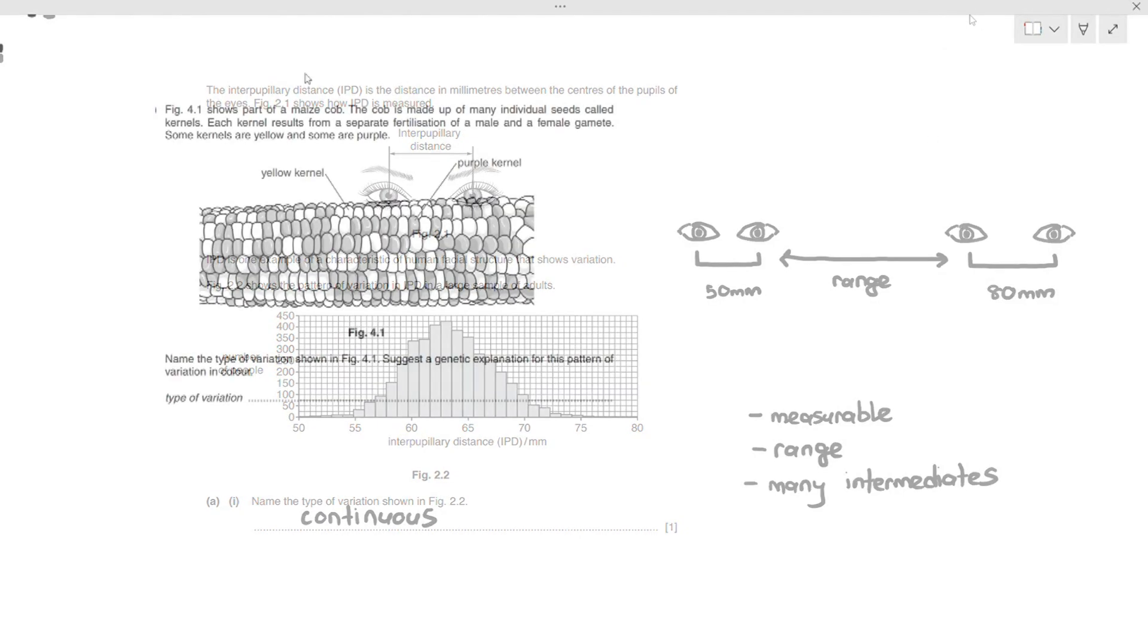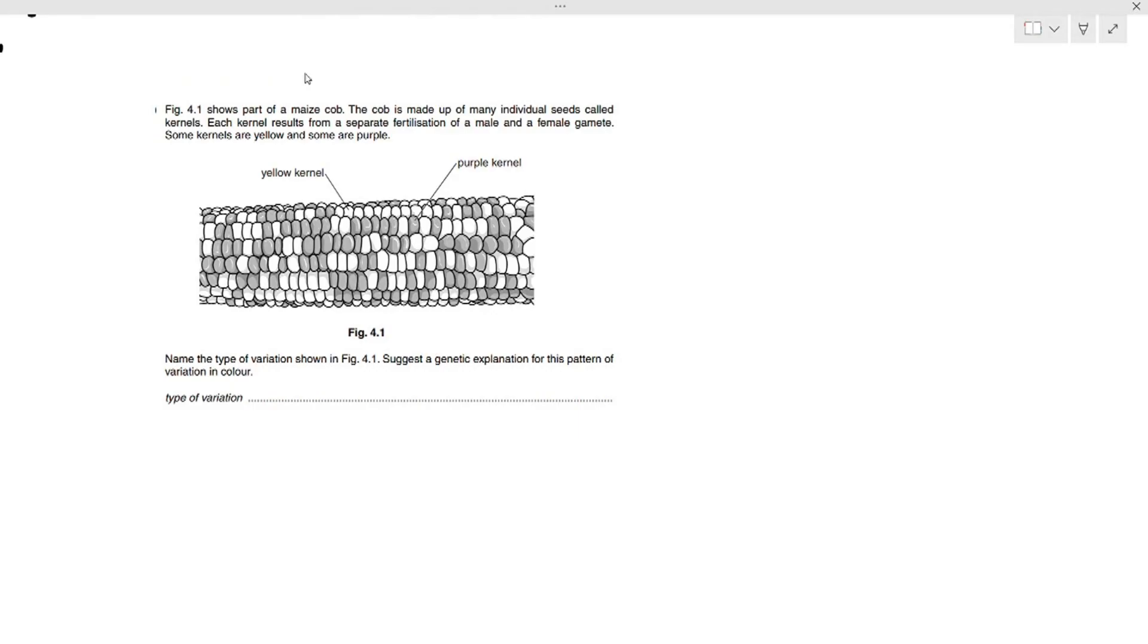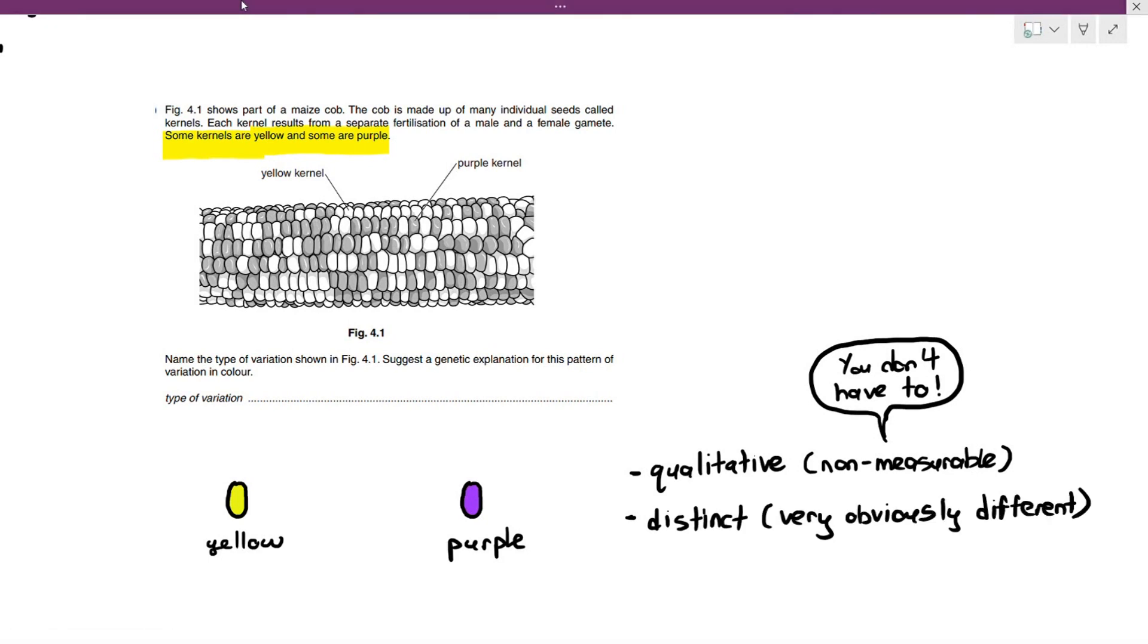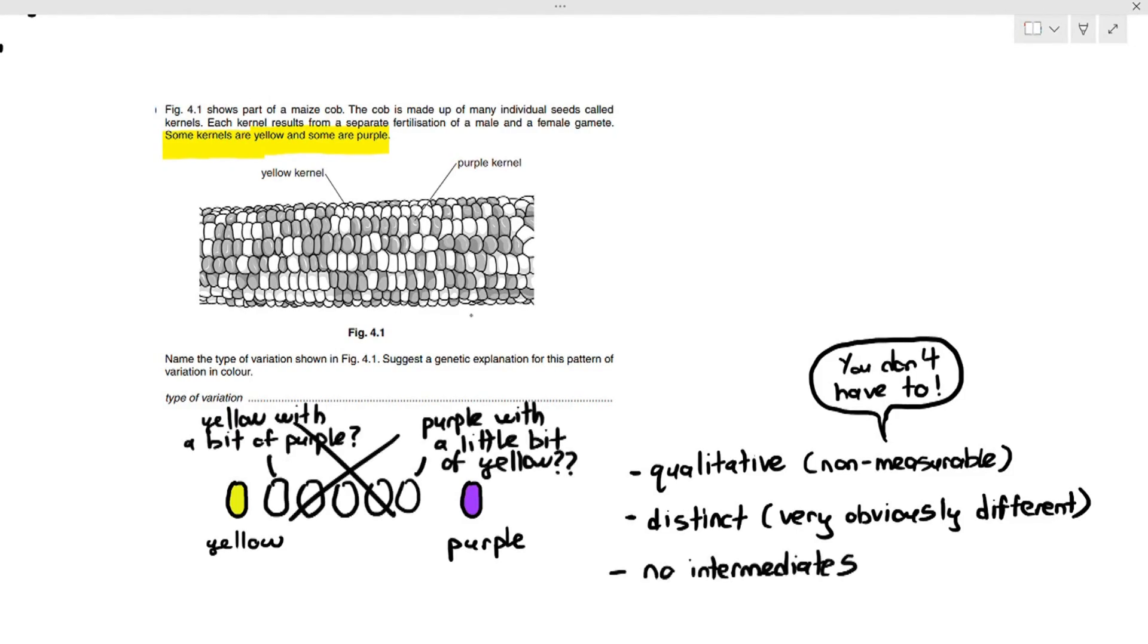Another one here. Figure 4.1 shows part of a maize cob. The cob is made up of many individual seeds called kernels. This is the one that we will usually take to make popcorns. Each kernel results from a separate fertilization of male and female gametes. Some kernels are yellow and some are purple. What type of variation is this? And suggest a genetic explanation for this pattern of variation. Immediately, you already know that some kernels are yellow and some are purple. It's qualitative. There's a quality here. It's non-measurable. You don't say which one has more color and which one has less color. Or which one is more purple and which one is less purple. Or which is more yellow and which is less yellow. You just ask the question, which is yellow and which is purple. Number two, it's distinct because the purple kernels are obviously very different from the yellow kernels. So, there is no such thing as yellow with a bit of purple or purple with a bit of yellow. There's no such thing like that. It's either only yellow or purple. Therefore, there are no intermediates in this case and this is discontinuous.